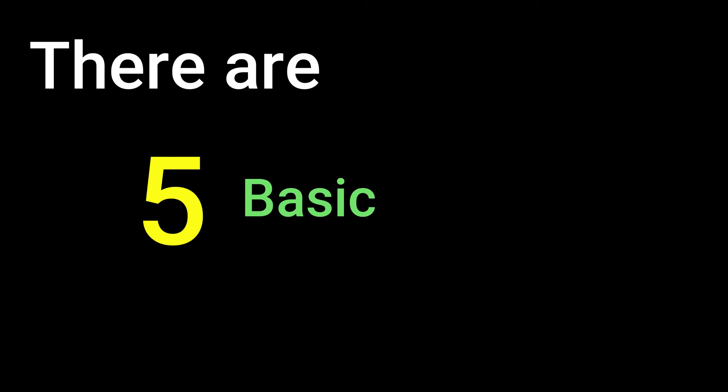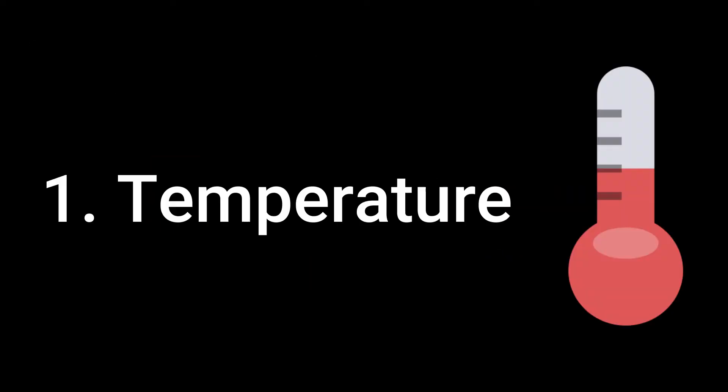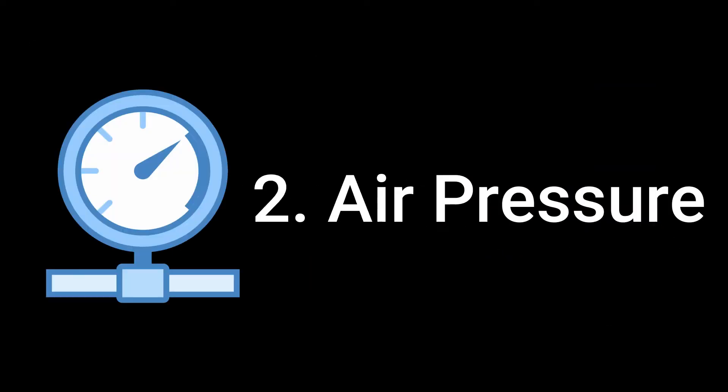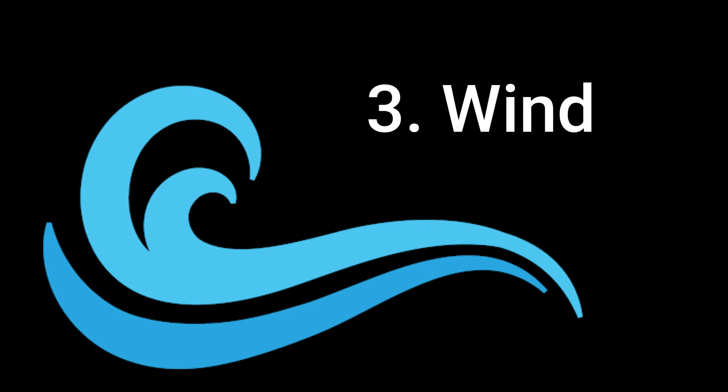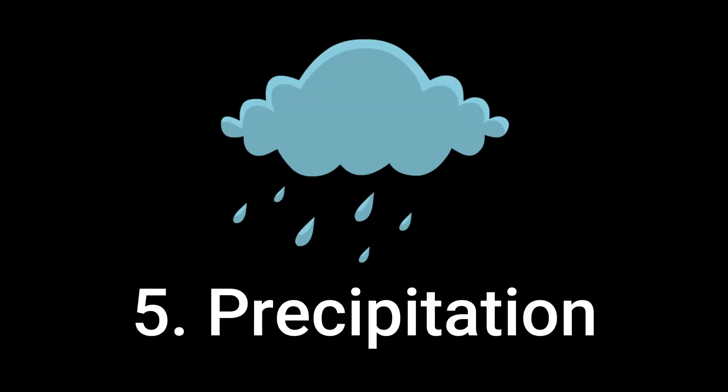However, out of those, there are five basic elements: temperature, air pressure, wind, humidity, and precipitation.